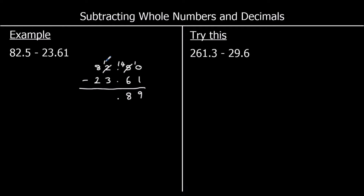Now the ones: 1 take away 3, I don't want to do. So I'll steal one of the tens, and that's worth 10 in the ones. 11 take away 3 is 8. And 7 take away 2 in the tens is 5. So my answer is 58.89.